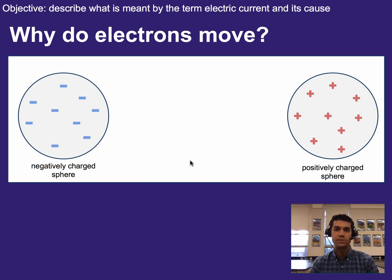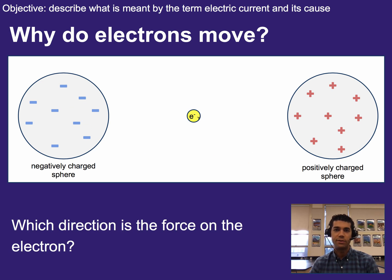Alright, so to help us answer why do electrons move, let's consider this scenario. We have a negatively charged sphere and a positively charged sphere, and then we plop an electron down in the middle. What direction is the electron going to move, or what direction is the force on that electron? Think about it for a second.